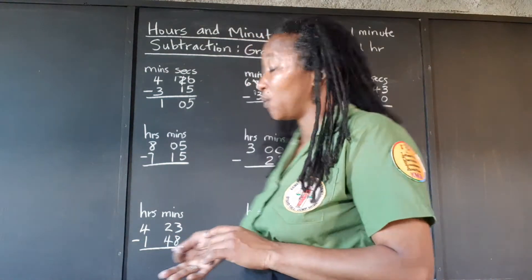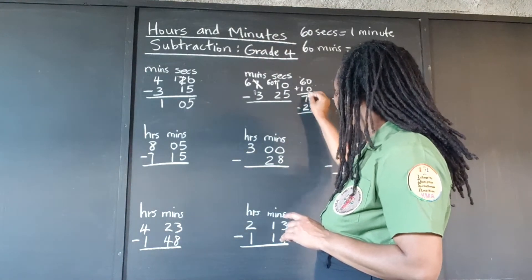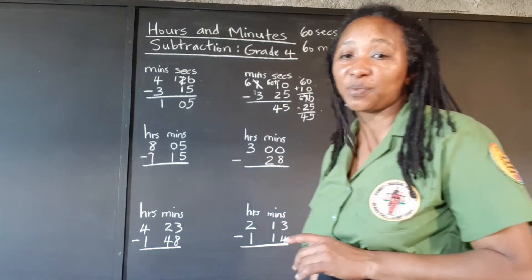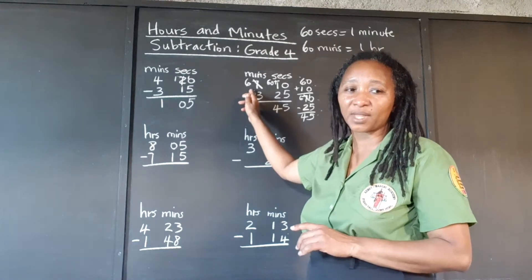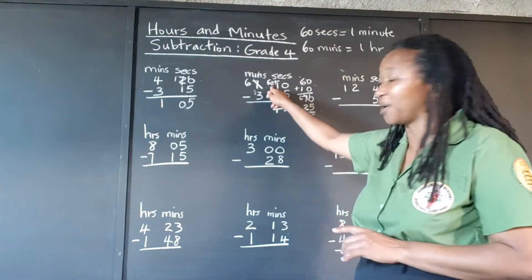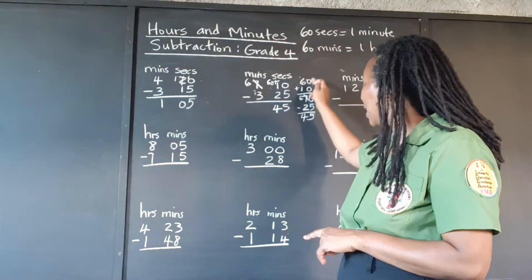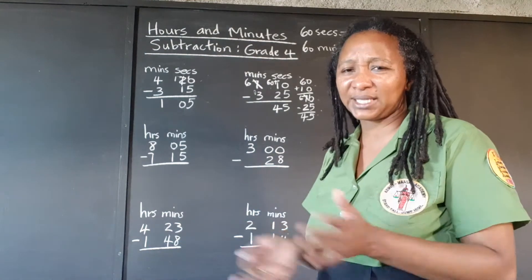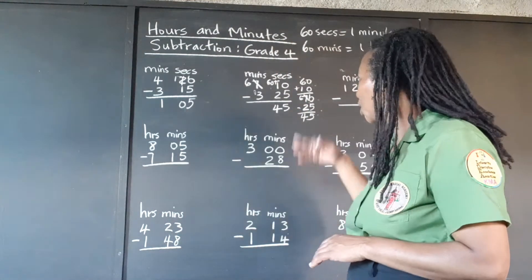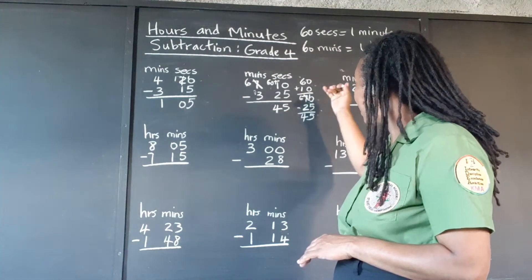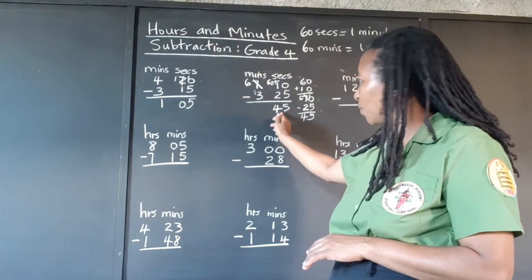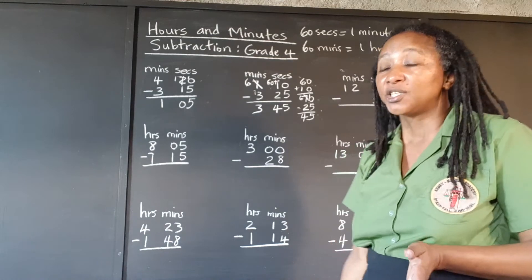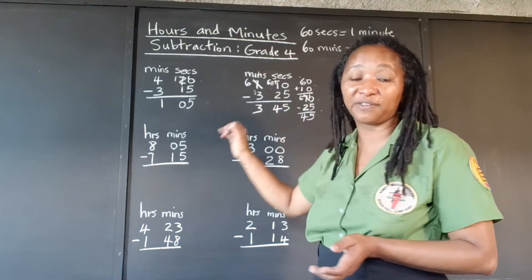We have a lot of seconds now. We can take the 25 from the 70, and that gives us 45 seconds. We took 1 minute from the 7 minutes, carried it over as 60 seconds, and added it to the 10 seconds already there, giving us 70 seconds in all. We took out the 25 and we're left with 45. So that's what we put under the seconds. And 6 minutes take away 3 minutes gives 3 minutes. The final answer is 3 minutes and 45 seconds.